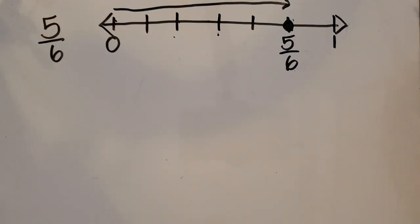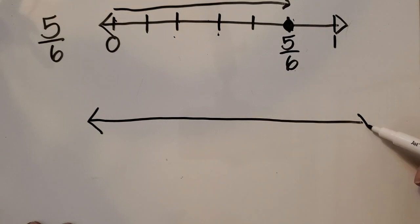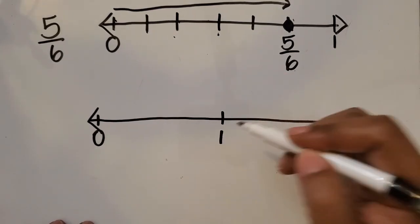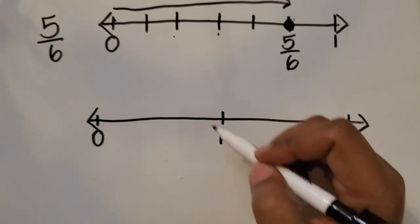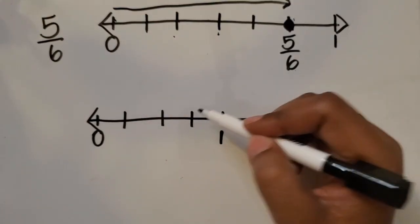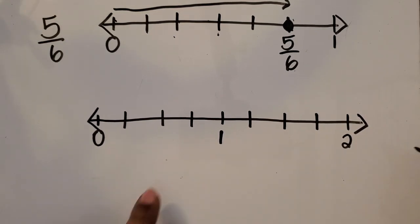What if we wanted to represent a fraction greater than one, or a mixed number, on the number line? We want to draw a number line that represents more than one whole. So this time, what if our number line represented two wholes? That halfway mark would be one whole, so we have one whole here and another whole here. Now that we have two wholes, let's partition each whole into fourths — four equal parts in each whole.